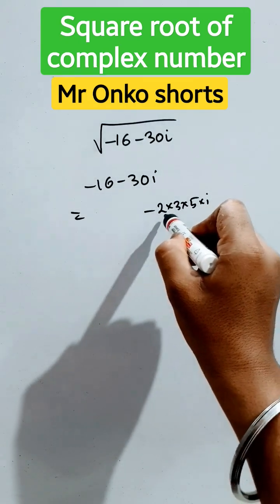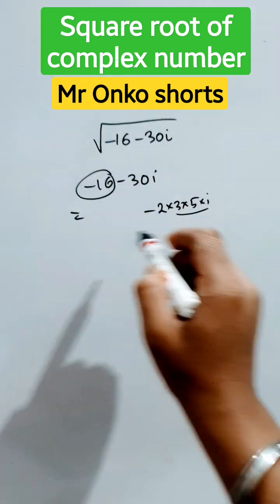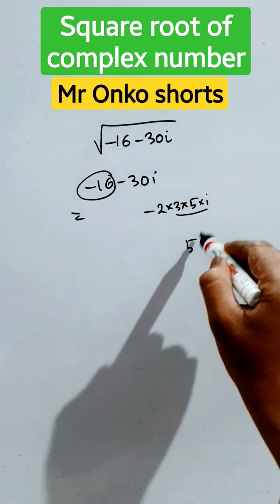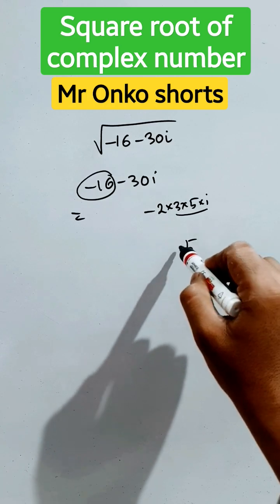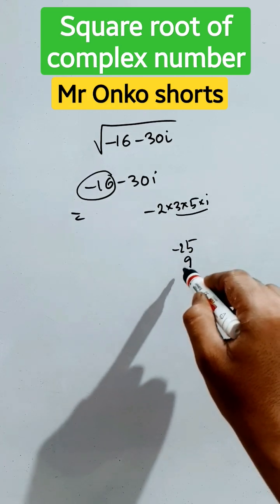Now here, except 2, we have to manage this and find minus 16. So if we take 5 square that is 25 into i square that is minus 25 and 3 square that is 9. So this is minus 16.